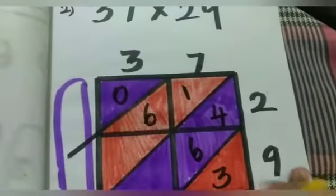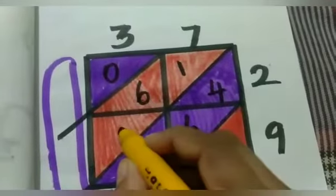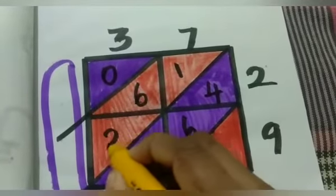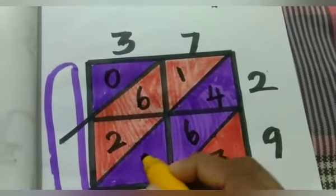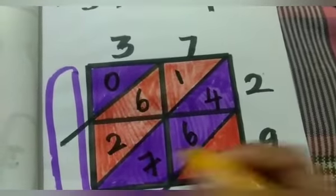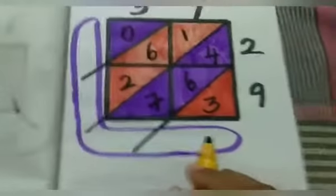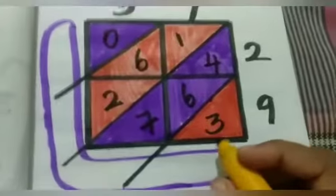Next, 3 nines are 27. So, 2 is the 10-strip and 7 is the 1-strip. Now we can add.